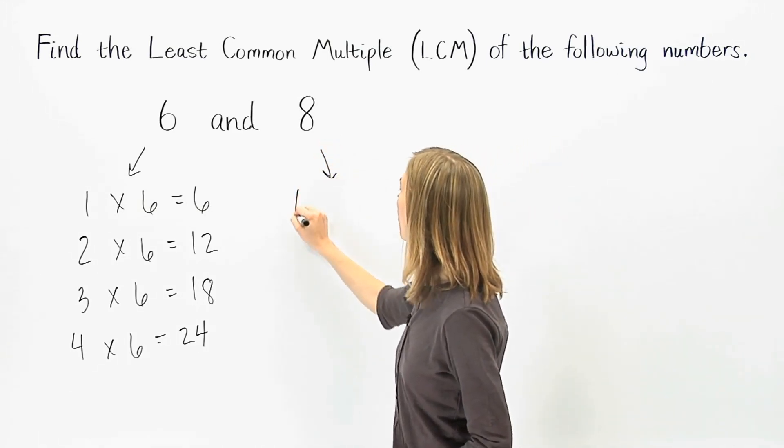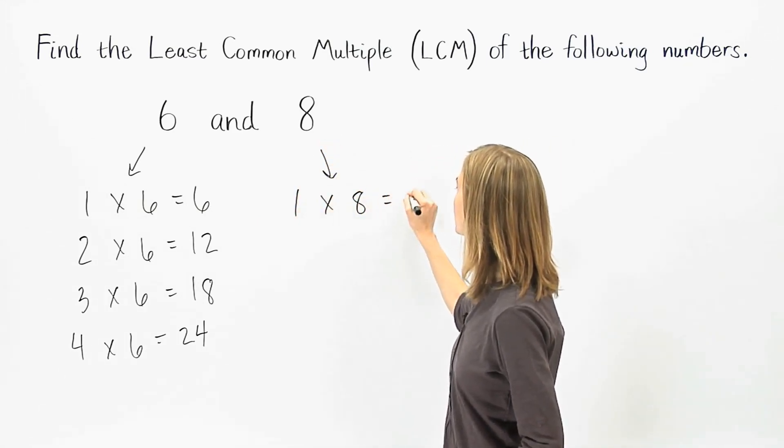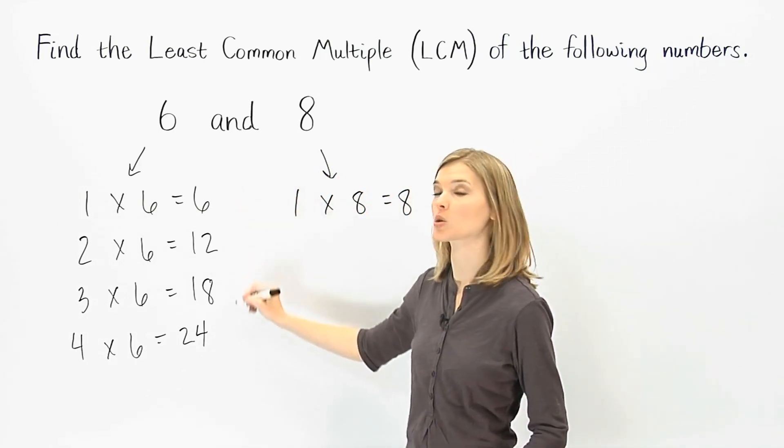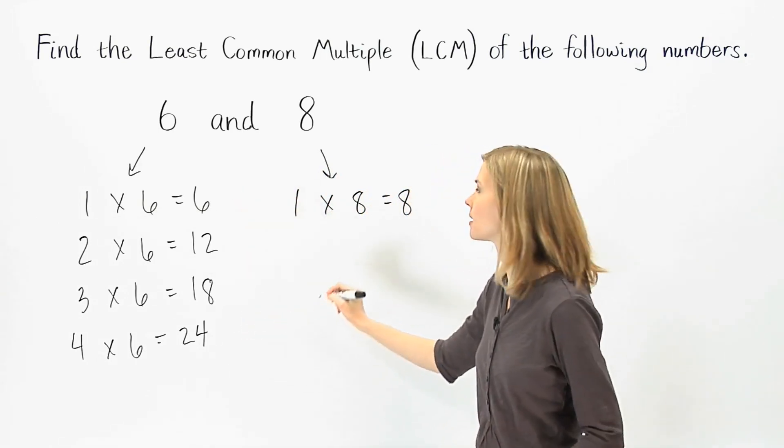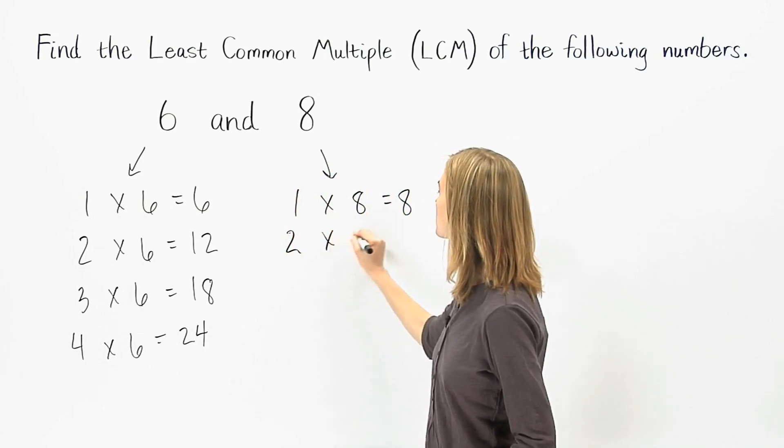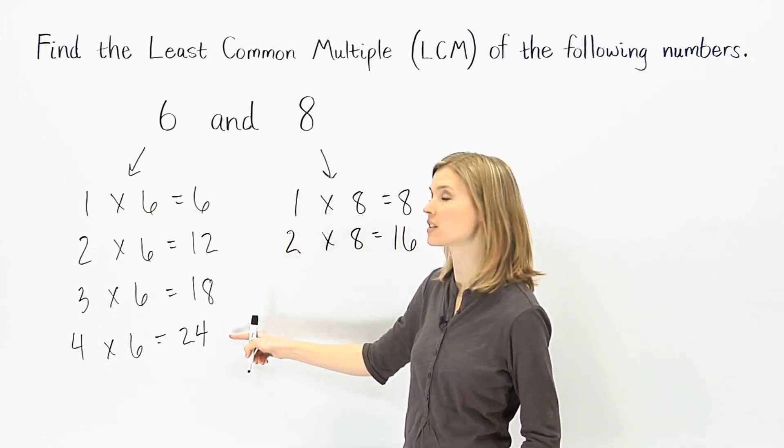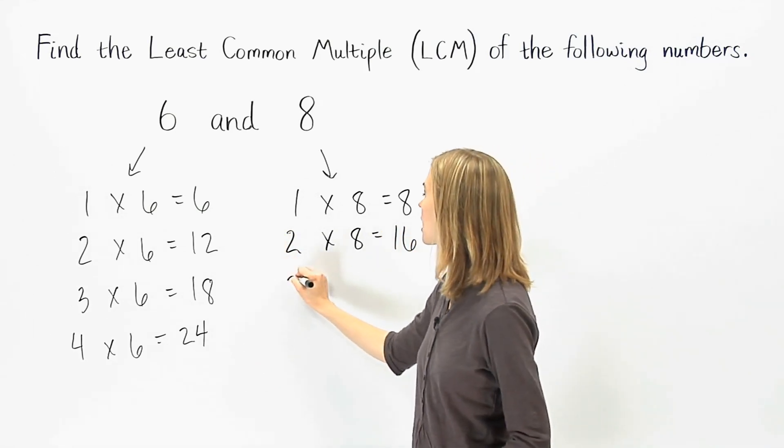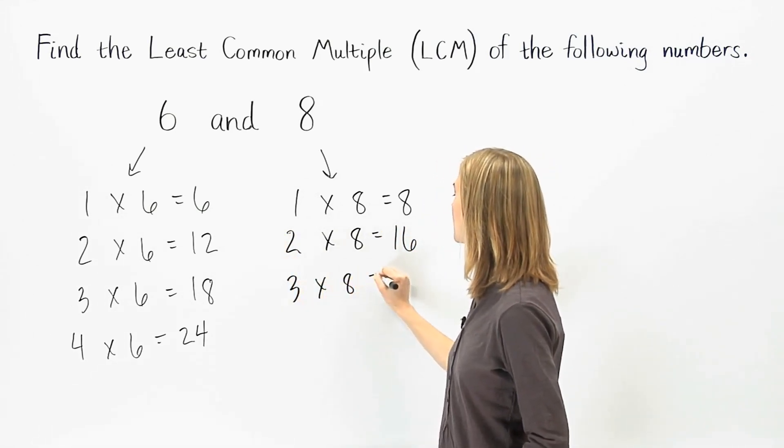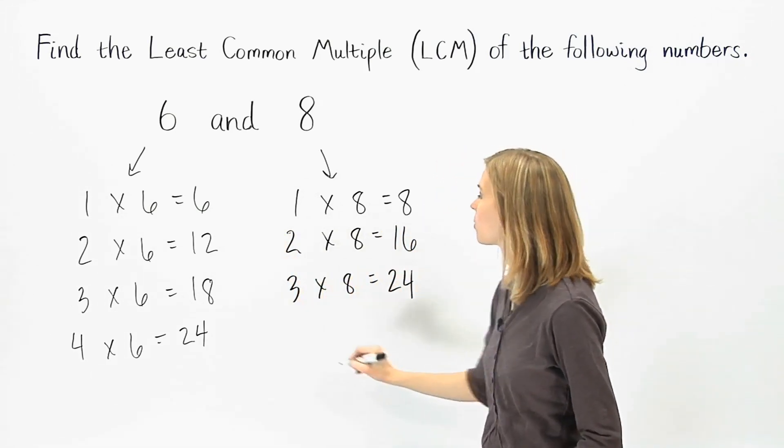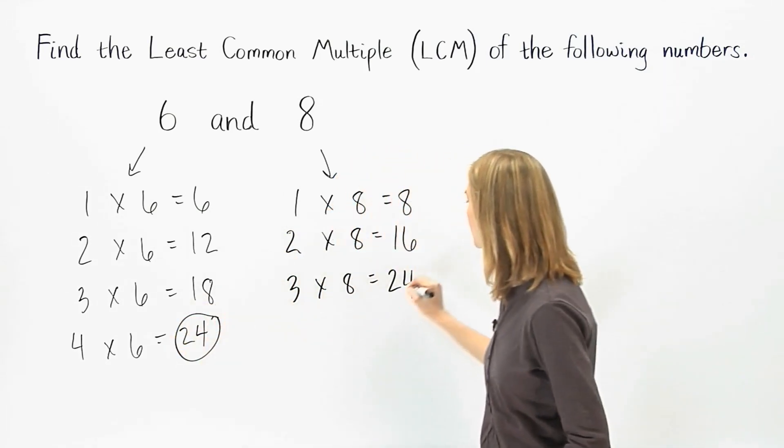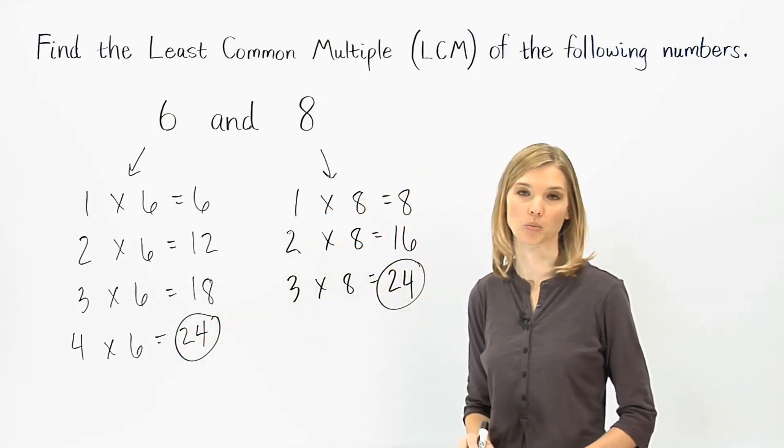So, 1 times 8 is 8, which is not a multiple of 6, so we go on. 2 times 8 is 16, which is not a multiple of 6, so we go on. 3 times 8 is 24, which is a multiple of 6, so we have found our least common multiple.